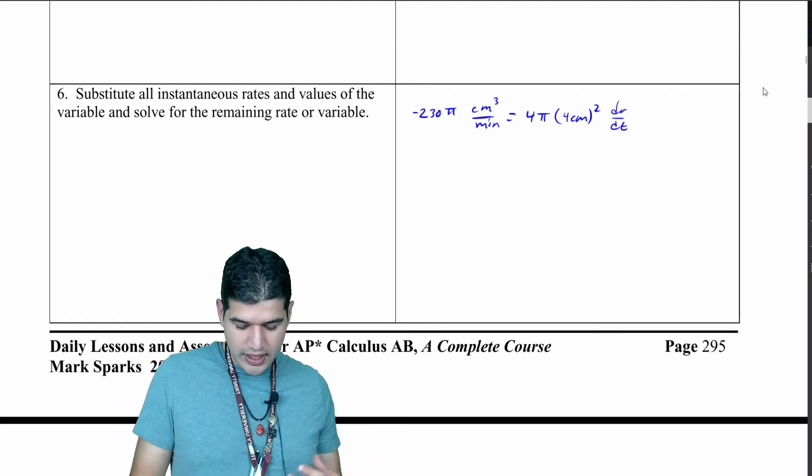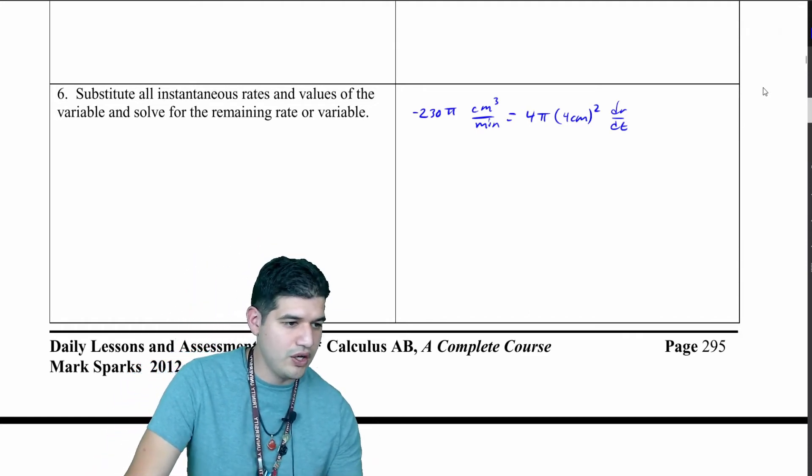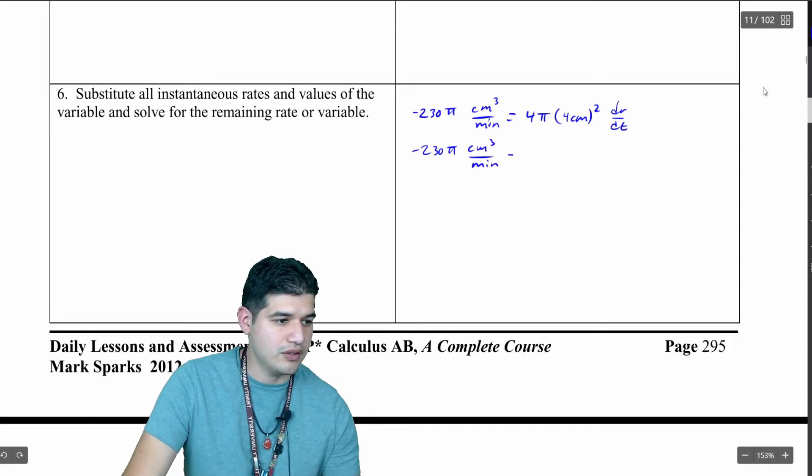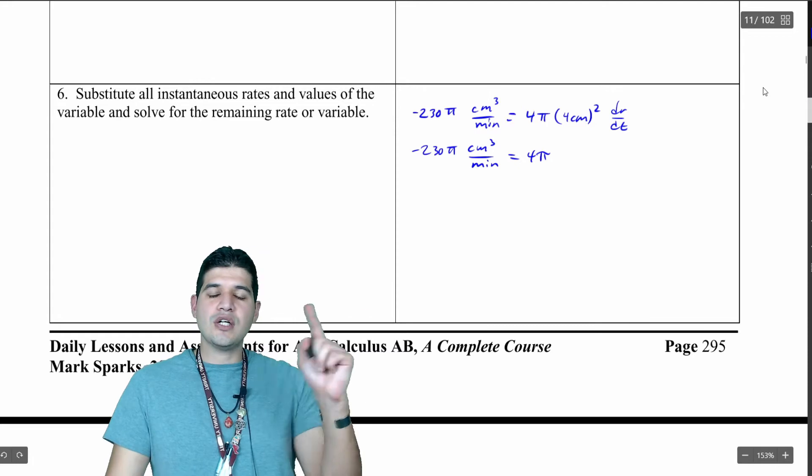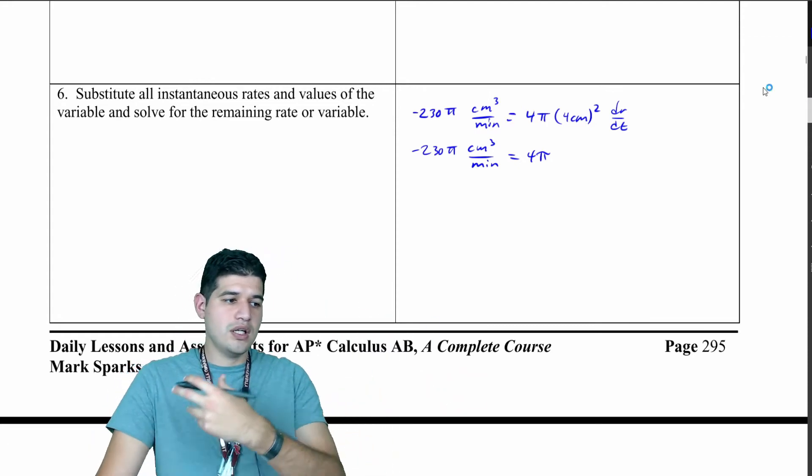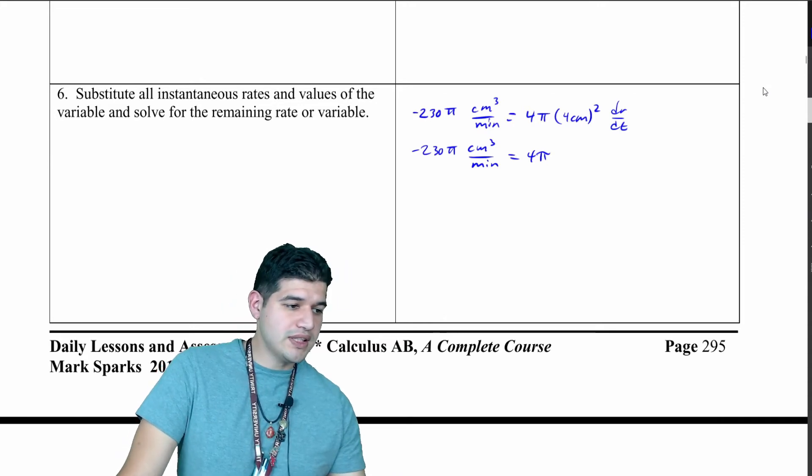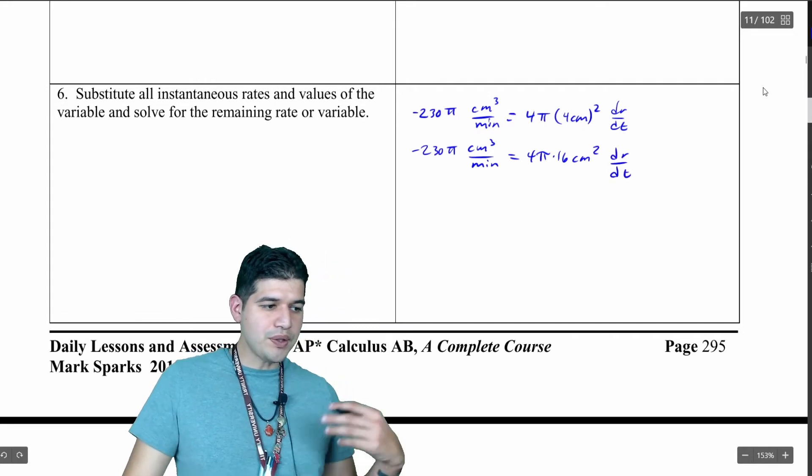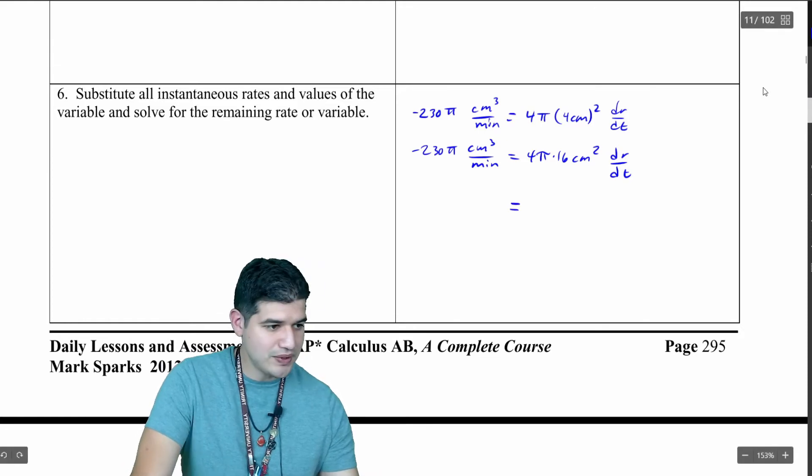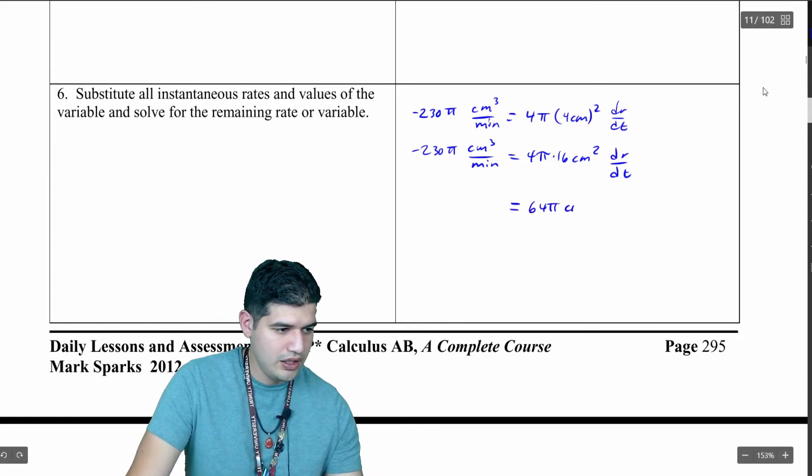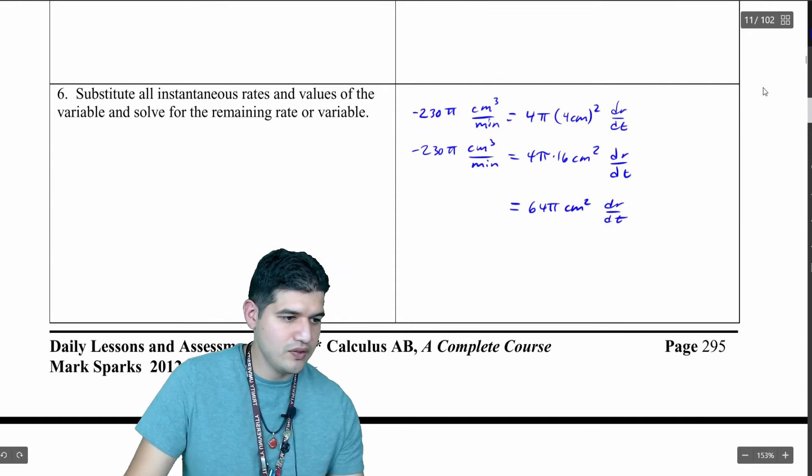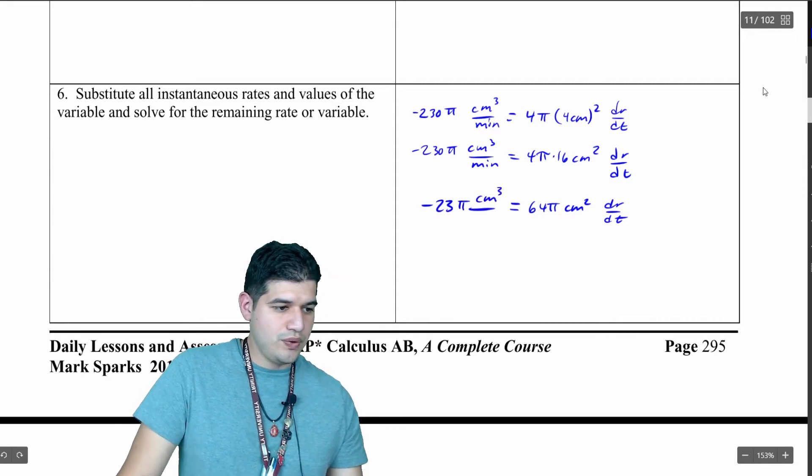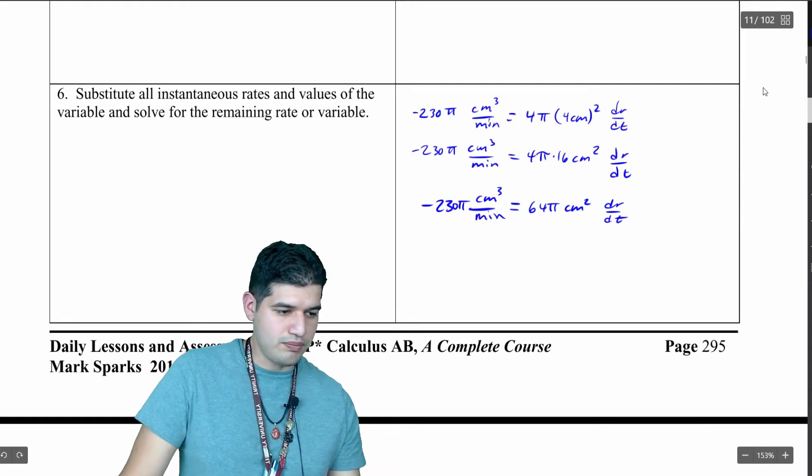Now I just want to solve for this. I'm going to go negative 230 pi cubic centimeters per minute. But I'm going to go 4 pi, and then that square goes to both the unit and the value. So 4 centimeters squared, the number is going to become 16, and it's going to be square centimeters now. So dr/dt. Now I'm going to multiply 4 times 16, and that's going to get me 64 pi square centimeters dr/dt on the right side of the equation. And then on the left side, negative 230 pi cubic centimeters per minute.